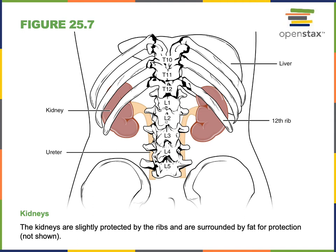The kidneys also produce the active form of vitamin D. This activation of vitamin D is stimulated by parathyroid hormone from the parathyroid glands. In response to hypocalcemia, low blood calcium concentration stimulates the parathyroid glands to secrete parathyroid hormone, which increases blood calcium concentration by increasing calcium reabsorption into the blood and reducing calcium excreted into the urine. It also stimulates the kidney to make the active form of vitamin D, which then acts in the small intestine to stimulate calcium absorption from the diet.